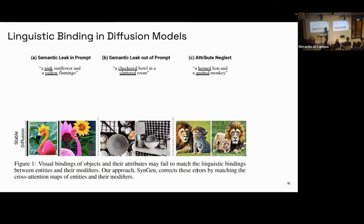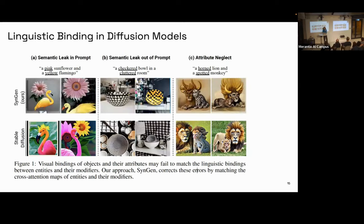The authors came up with examples where prompts are not well represented in the generated image. You can have semantic leak in the prompt — an attribute leaking to a different object — or semantic leak out of the prompt, where a checkered bowl causes checkered patterns everywhere. You can also have attribute neglect, where we just see a lion and a monkey with no horns or spots despite the prompt.